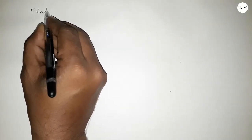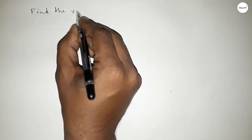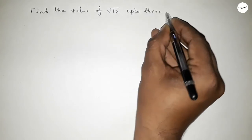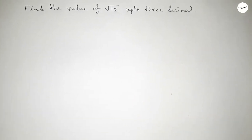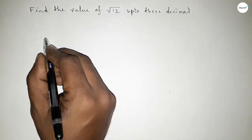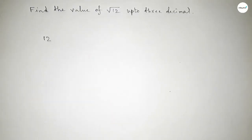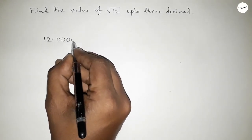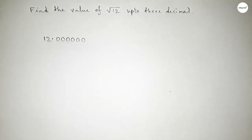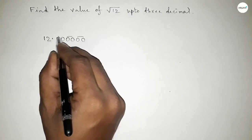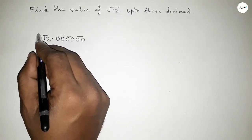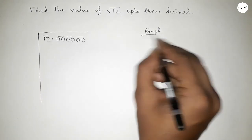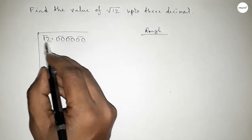Hi everyone, welcome to Essay Share Classes. Today in this video we have to find out the value of root 12 up to 3 decimals. So let's start the video. First of all, write here 12 and taking a point, and for three decimals we have to take six zeros, making them as pairs. Now drawing the symbol of division here and drawing some rough space.